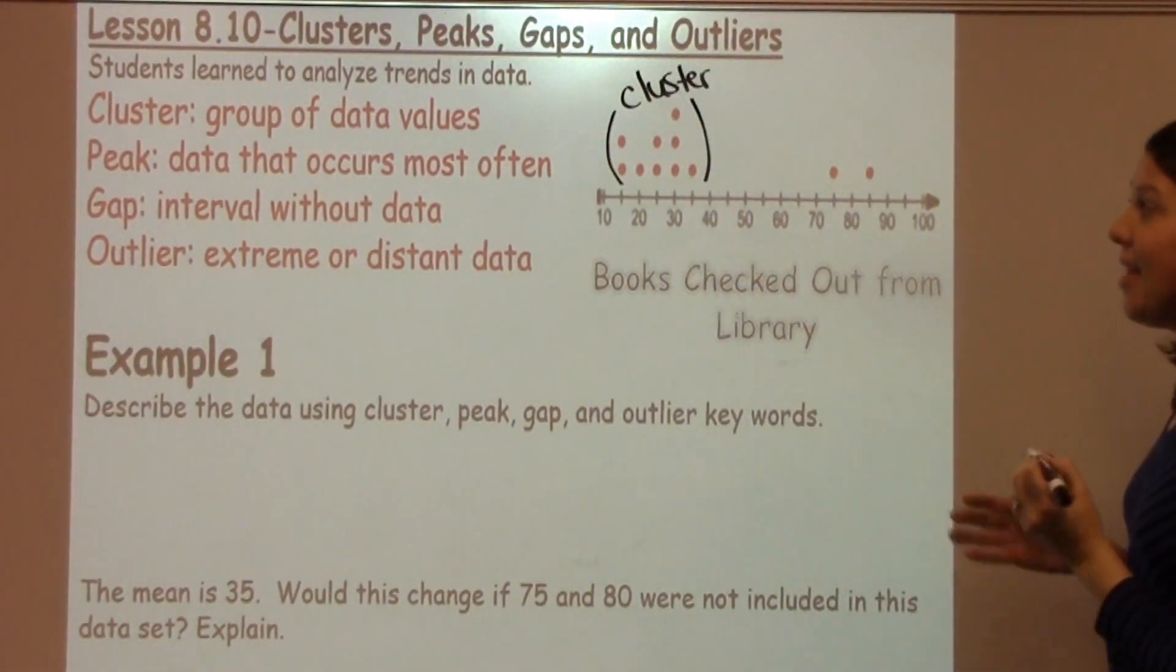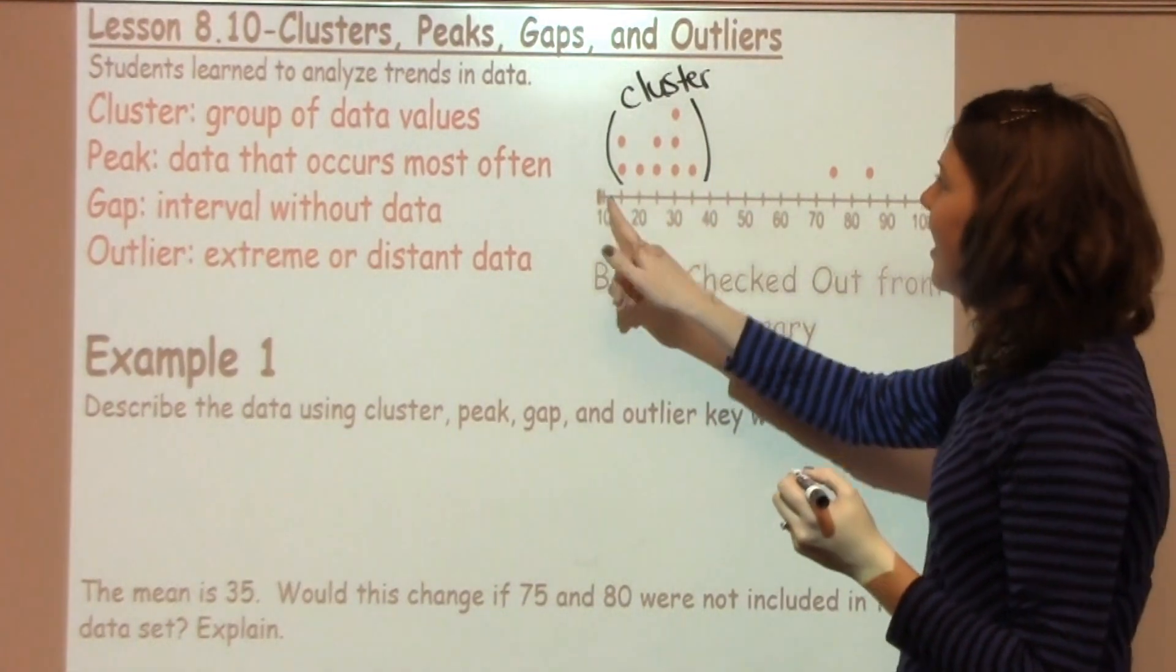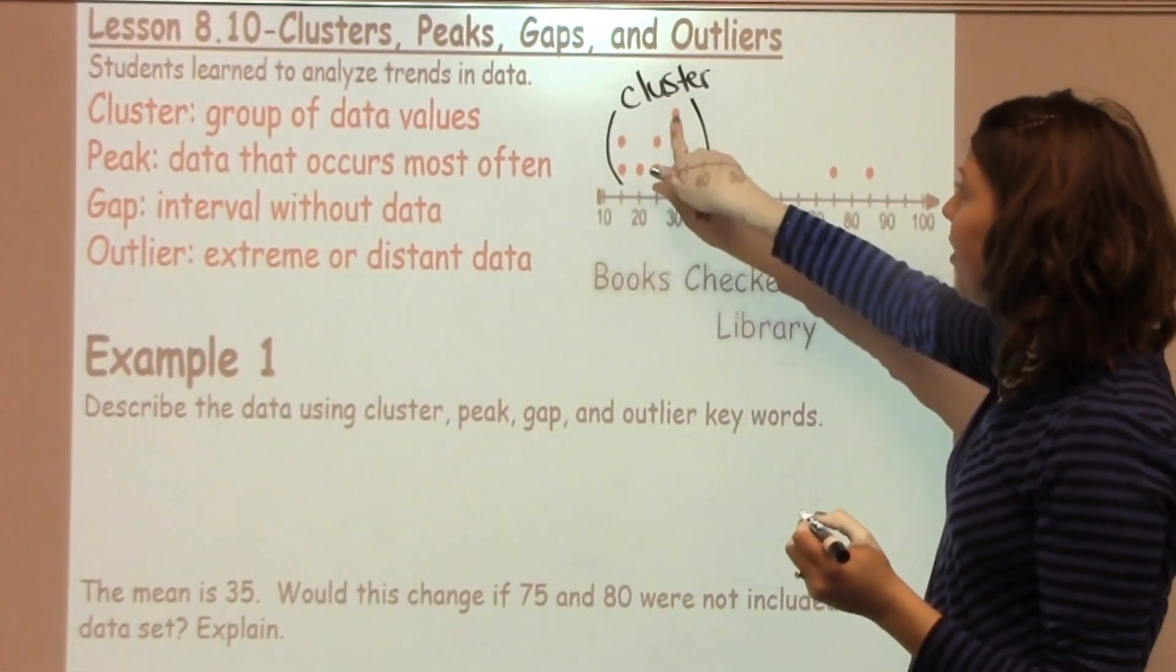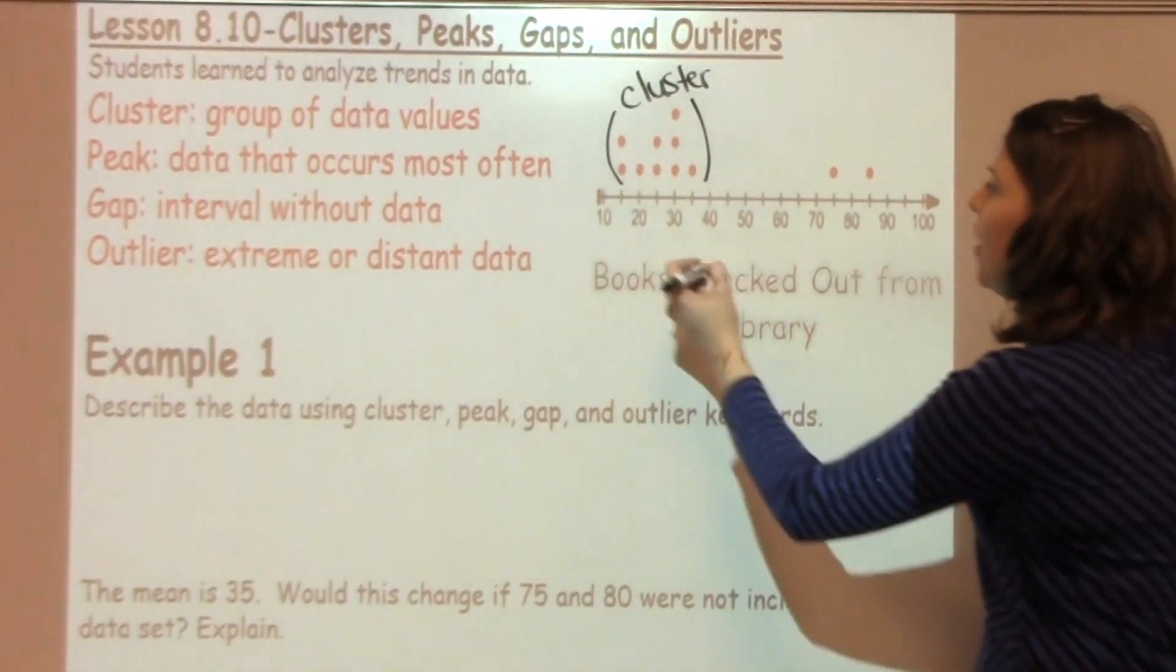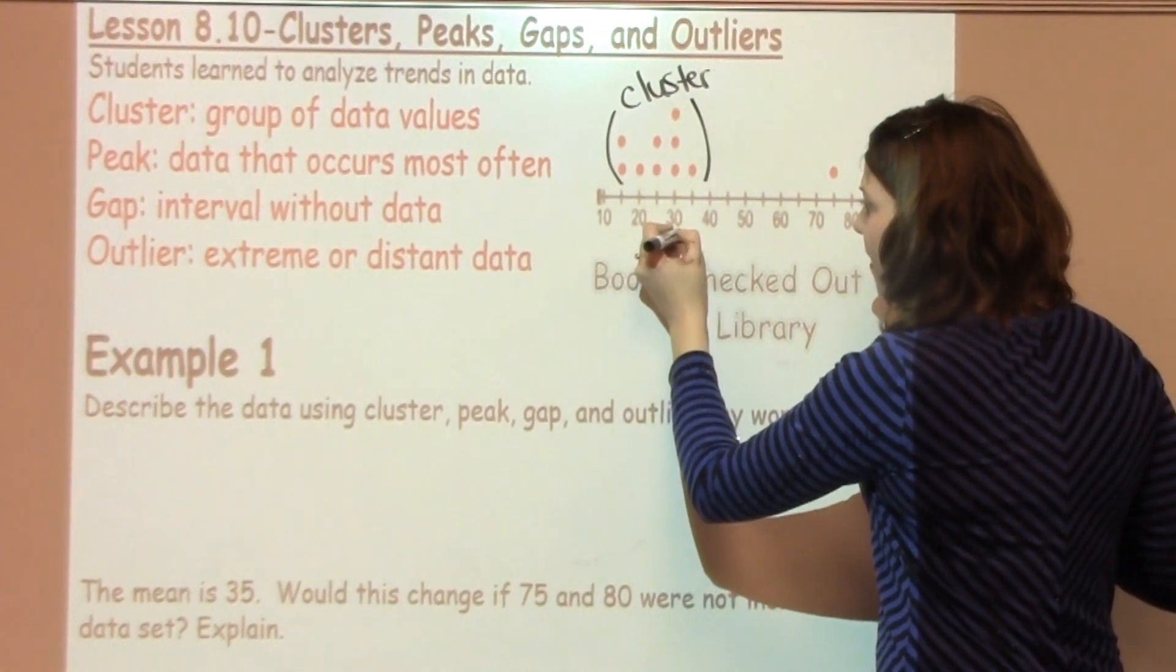Now, peak, the data that occurs most often. Looking at this again, I can see that I have a peak right here at 30 because it has three data points. So I'm going to label 30 as my peak.